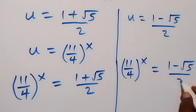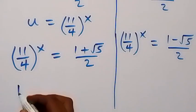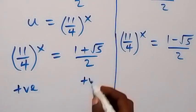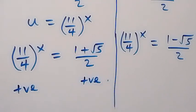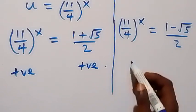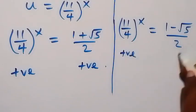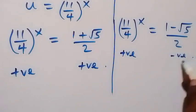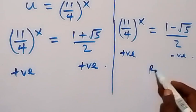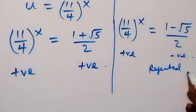The first solution gives a positive value on both sides, so it is accepted. The second solution gives a positive base but a negative right-hand side, so that one is rejected. We proceed with the accepted solution.